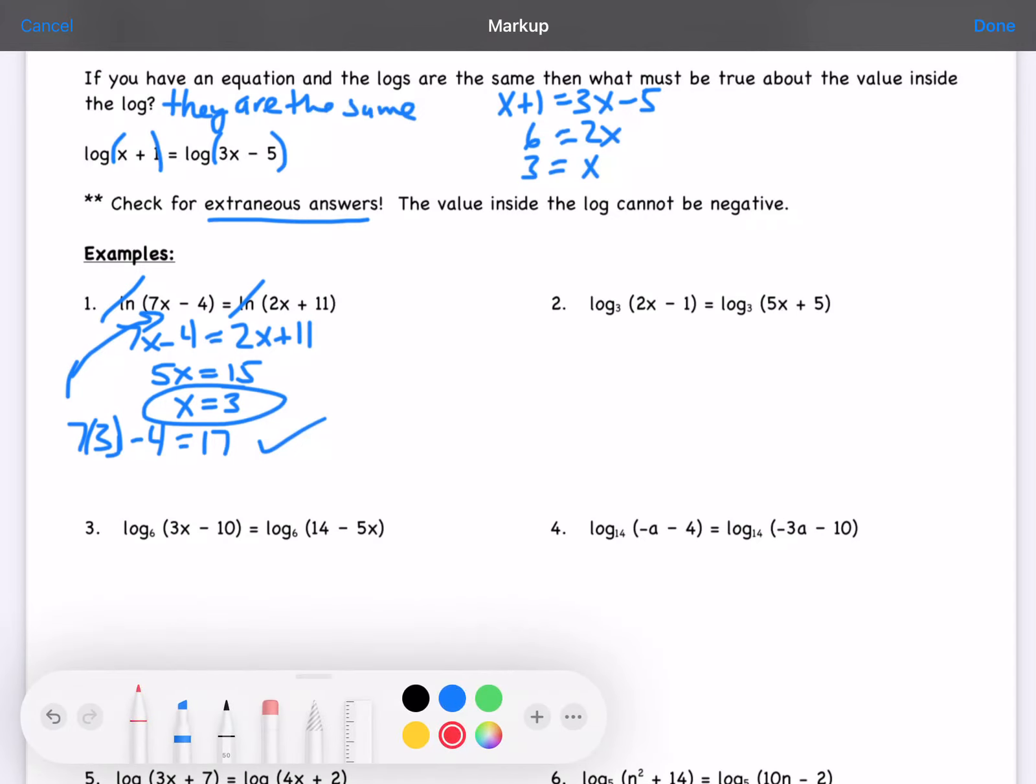When I look at number 2, log base 3s, I can cancel them out. So I set 2x minus 1 equal to 5x plus 5. I'm going to solve, I'm going to say 3x equals negative 6, and x equals negative 2.